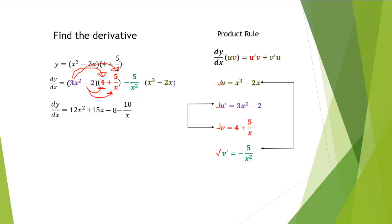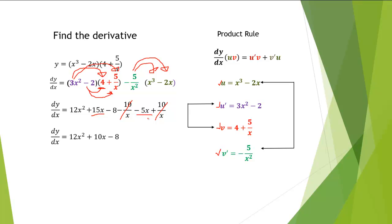We'll distribute negative 5 over x squared for our second term. Multiplying negative 5 over x squared times x cubed, we have negative 5x. Multiplying negative 5 over x squared times negative 2x, we have 10 over x. Now we'll combine like terms. The 10 over x terms will cancel. We can also combine x terms for a final result of 12x squared plus 10x minus 8.